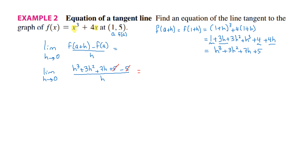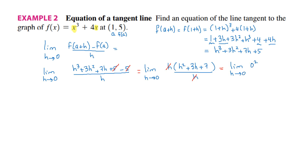All the remaining terms contain an h. I'll take this h outside as a common factor. The limit as h goes to 0 now — h is outside — then we have h squared plus 3h plus 7, divided by h. The h will cancel. Then the answer is the limit as h goes to 0 of h squared plus 3 times h plus 7. Substituting h by 0, since we are calculating the limit as h goes to 0, my slope is equal to 7.